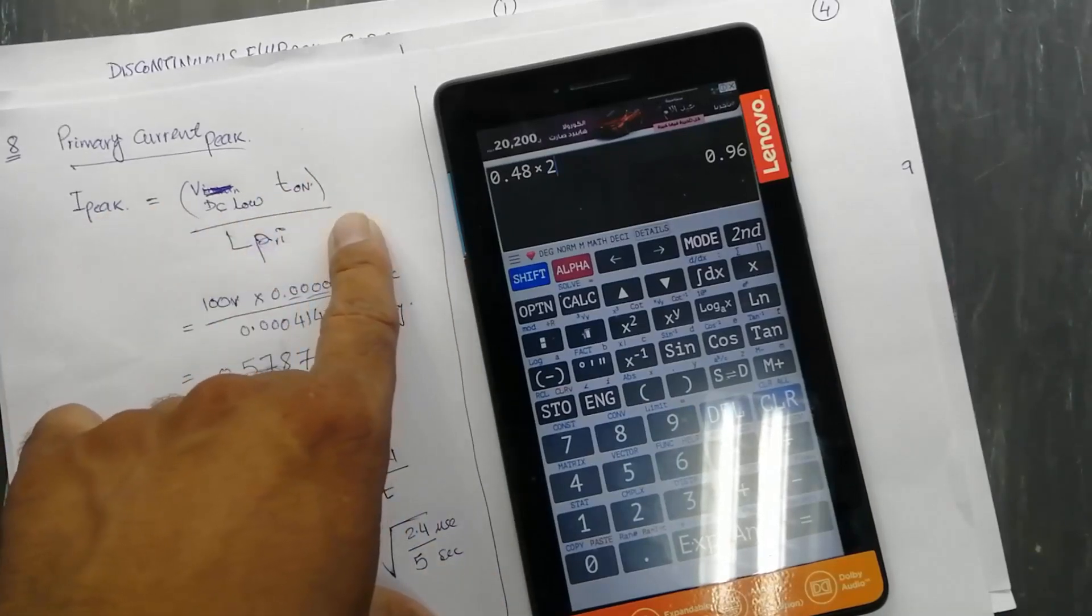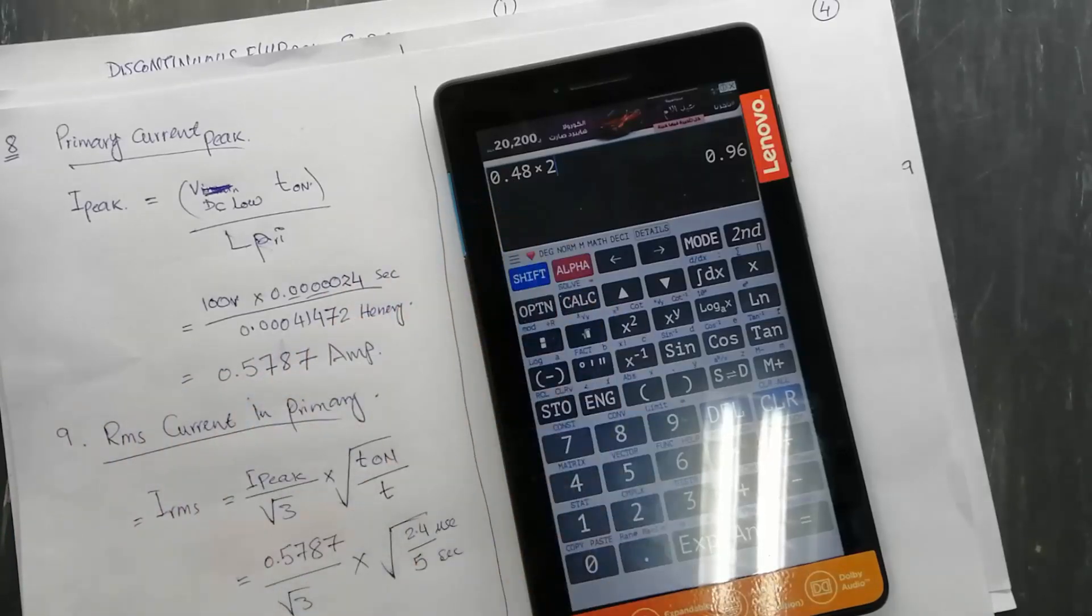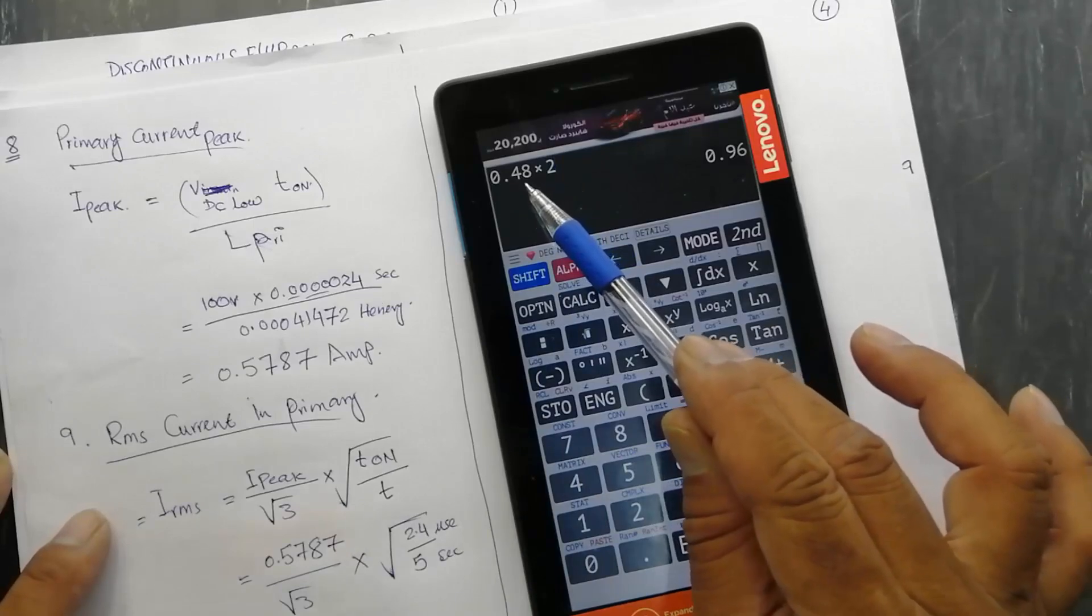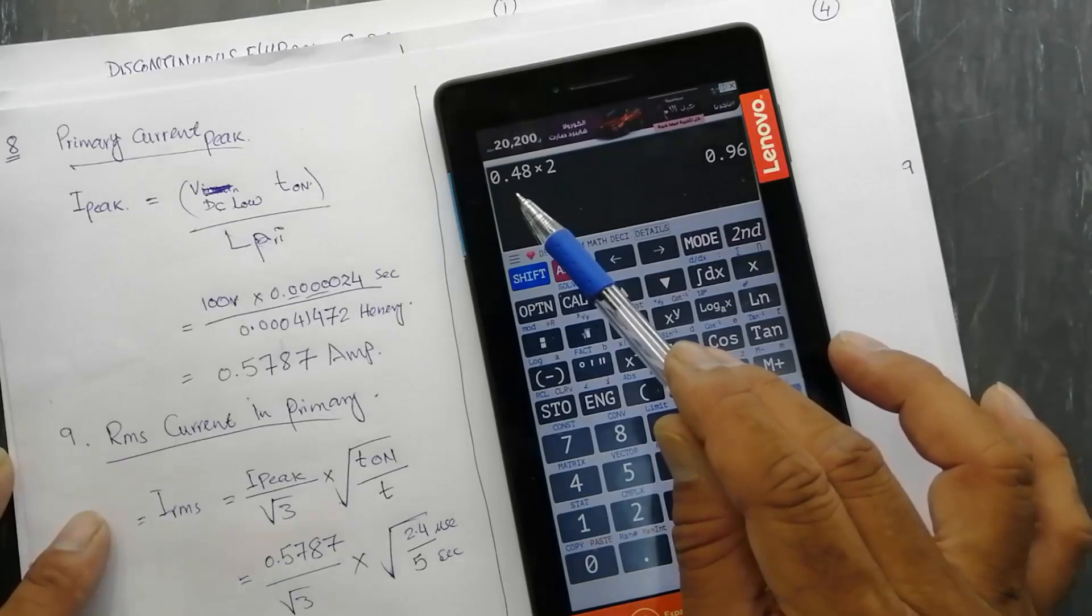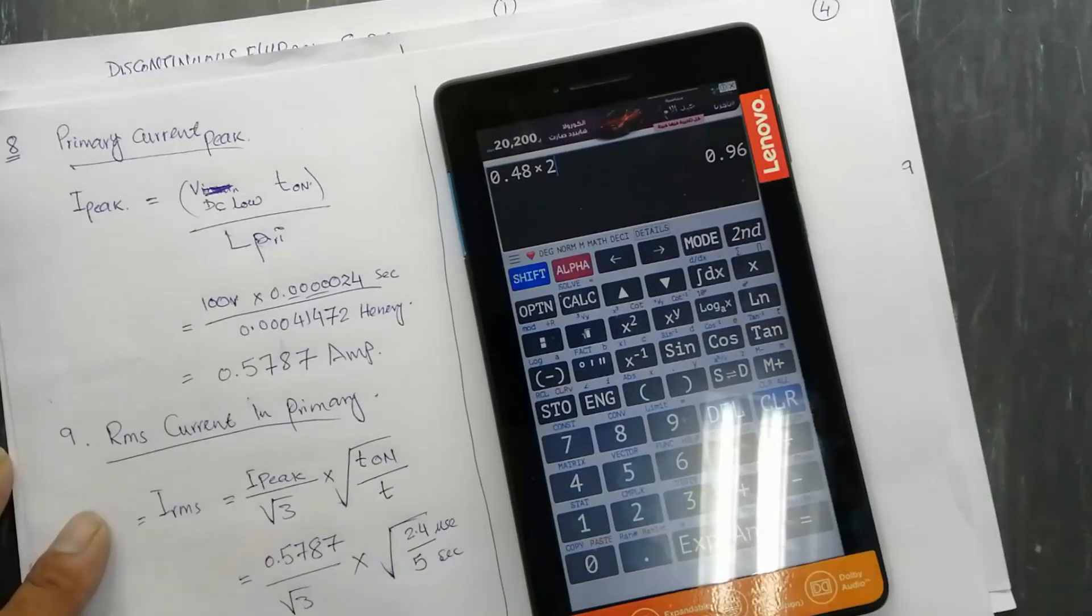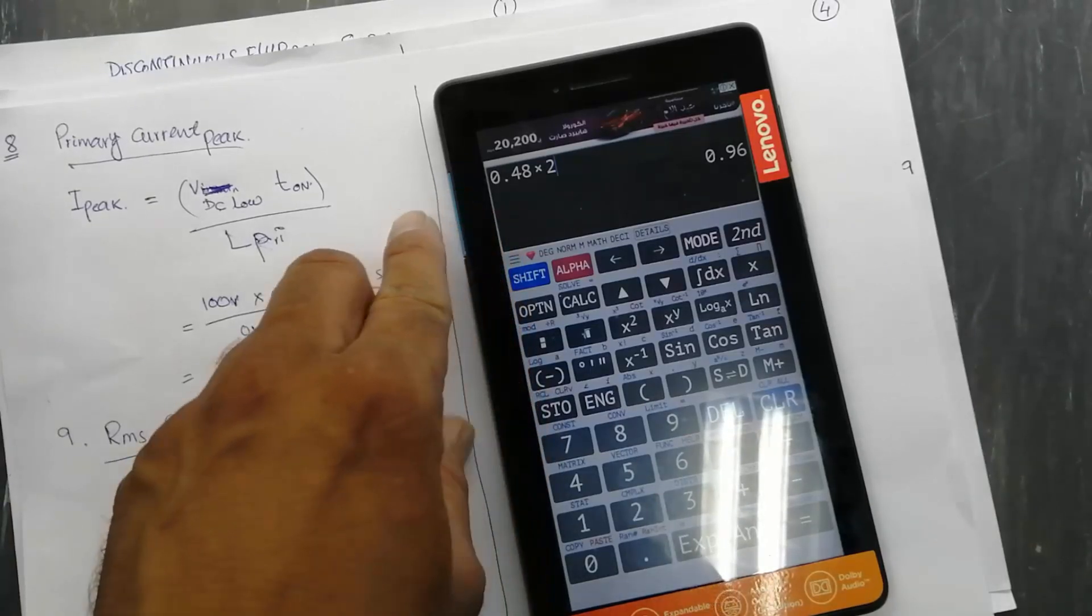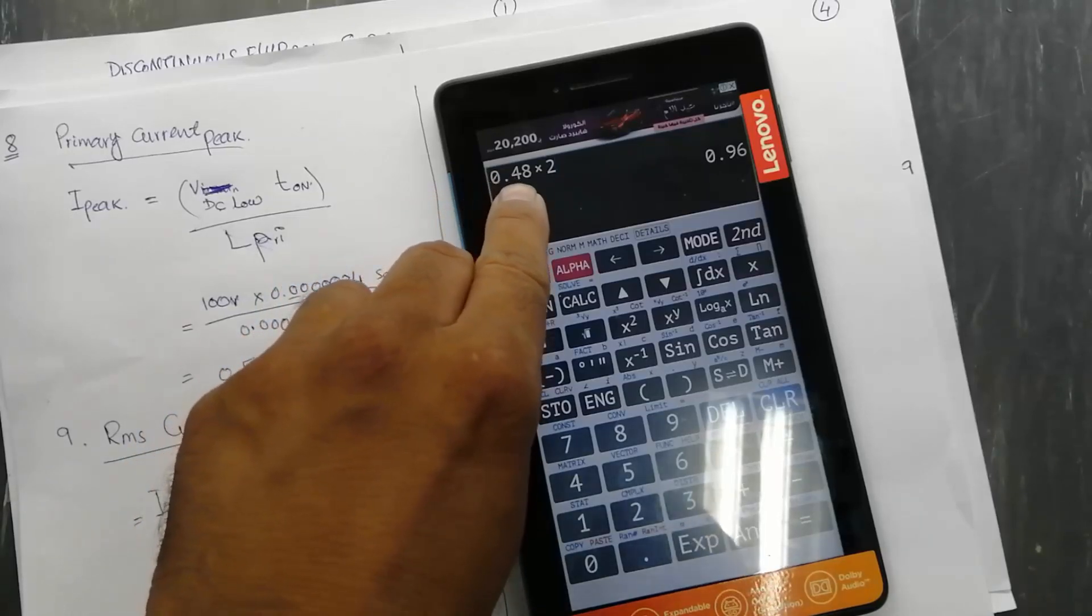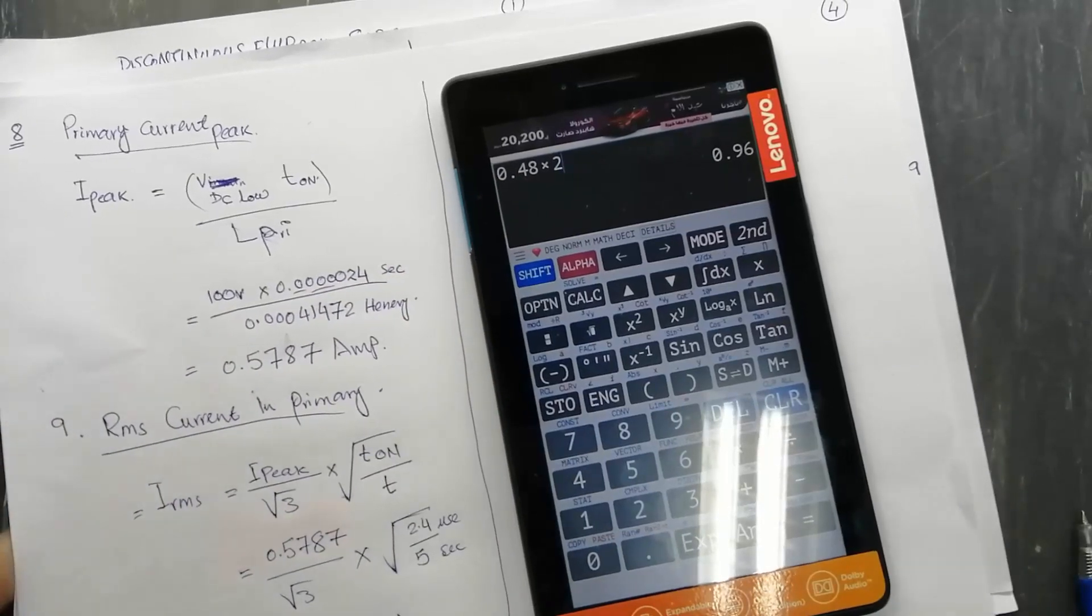Because when we select the core, at that time we have to verify this time on period. Why? Because that time diode recovery time, switching on time, all the events will be calculated in this period. So maybe when we will select a core depending on the B_max, maybe we have to adjust this 48 percent again. Thanks for watching, assalamualaikum warahmatullahi wabarakatuh.